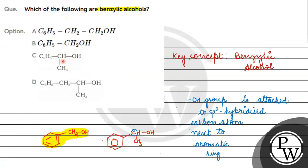So which options will be correct? This option will be correct, and B and C will be correct. If we look at A, we have the benzylic carbon. In these cases, the benzylic carbon is attached to the aromatic ring with the OH group, so they will also be benzylic alcohols.